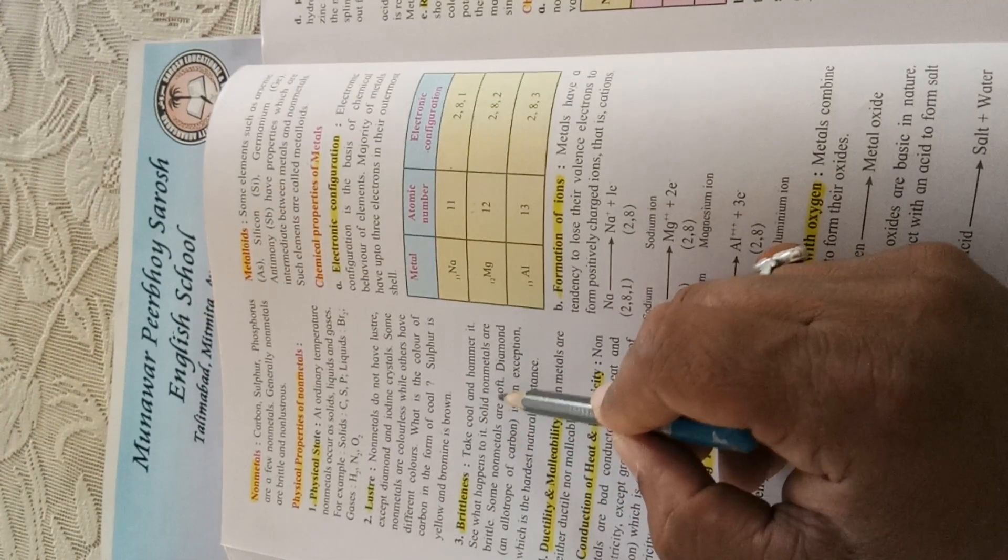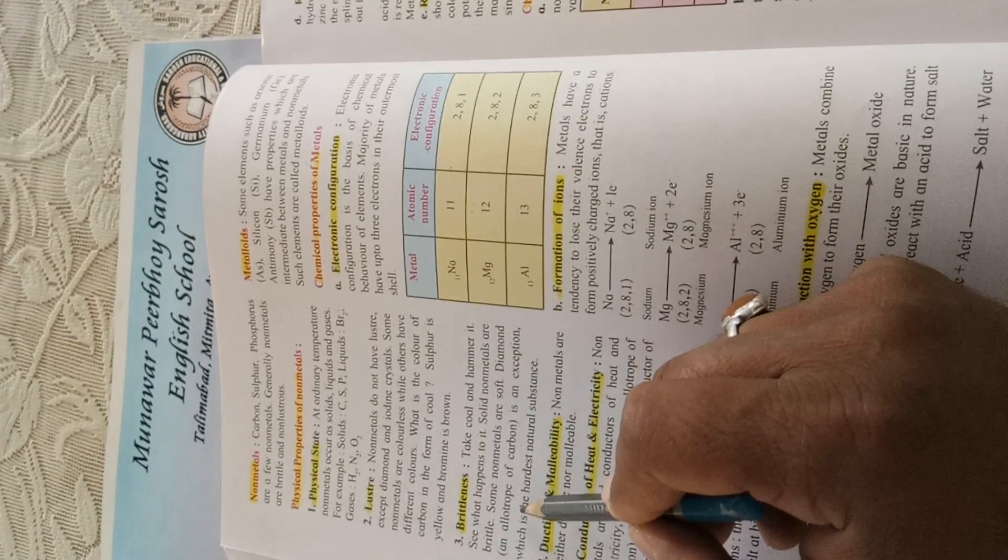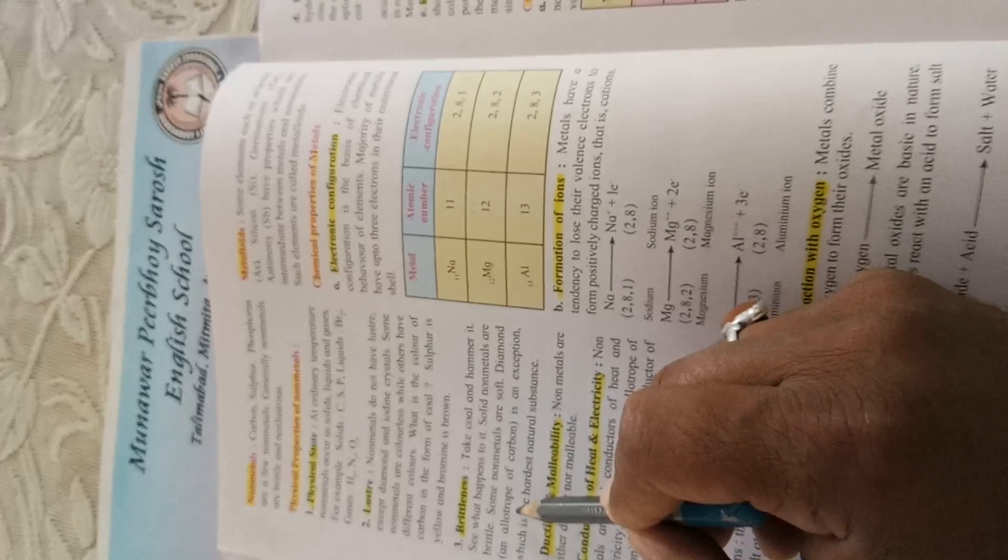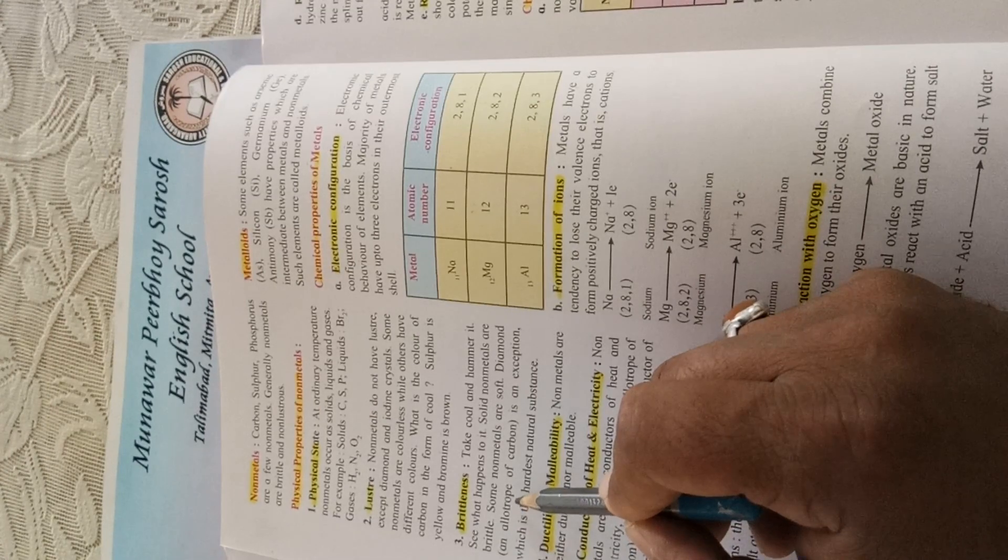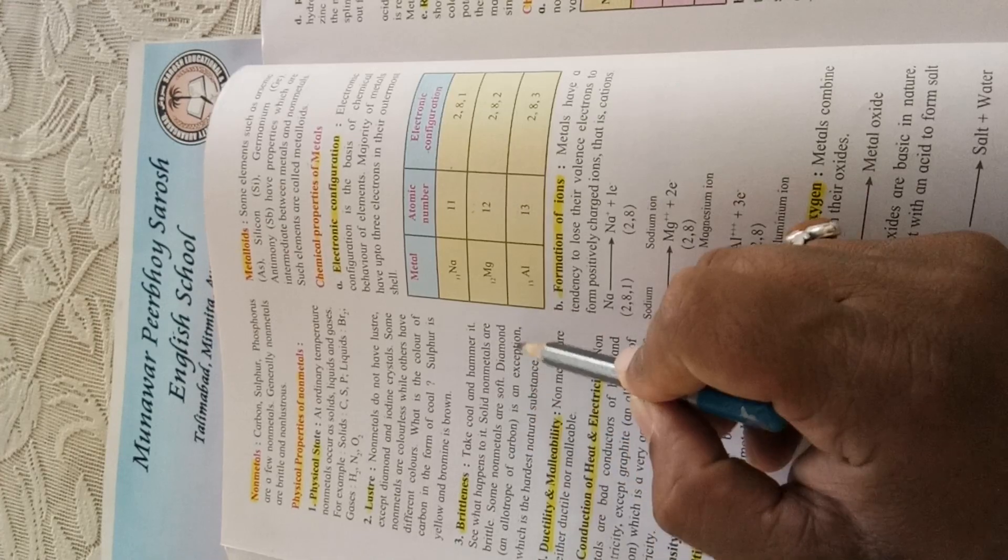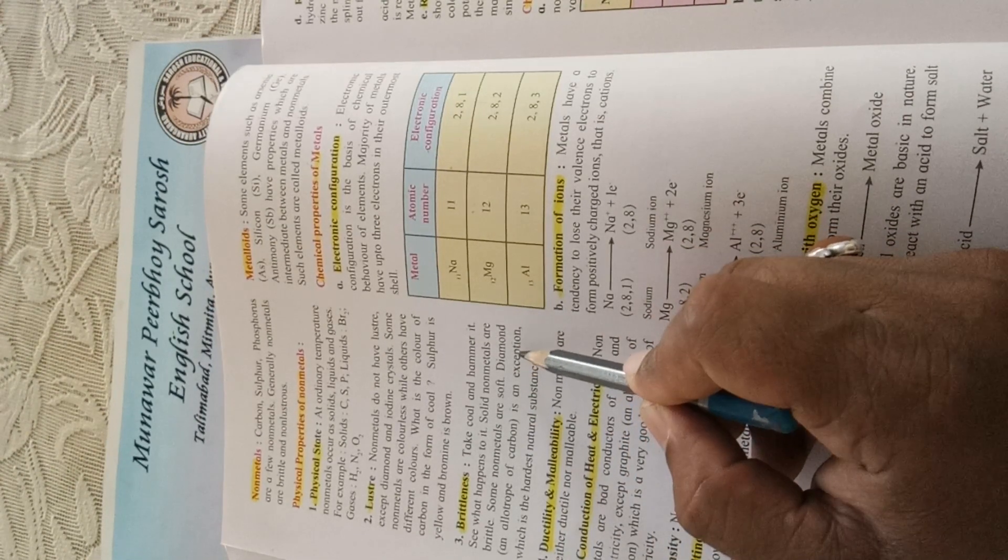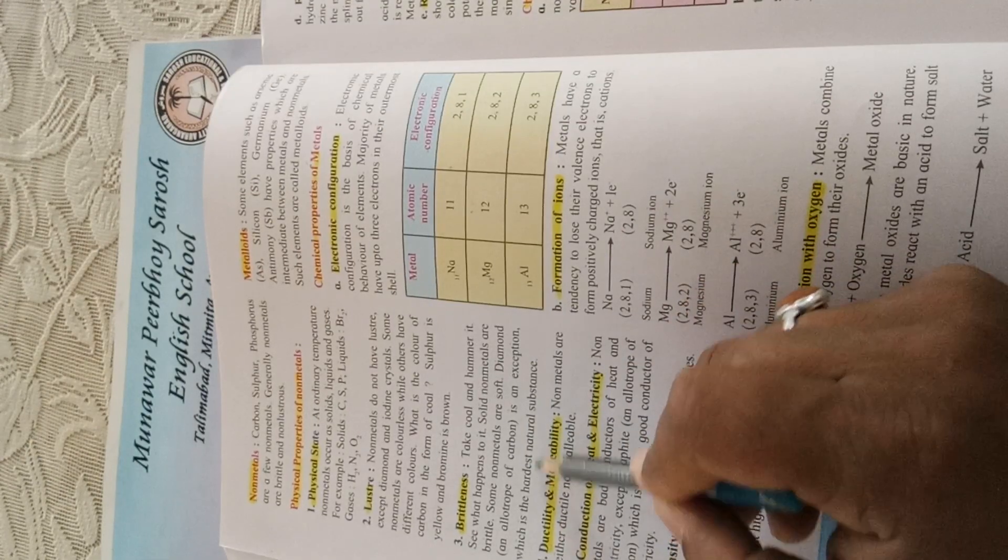Diamond, an allotrope of carbon—do you remember what allotrope means? Very good. Allotrope means another form. Diamond is an exception. Diamond is not soft; it is hard, the hardest natural substance.